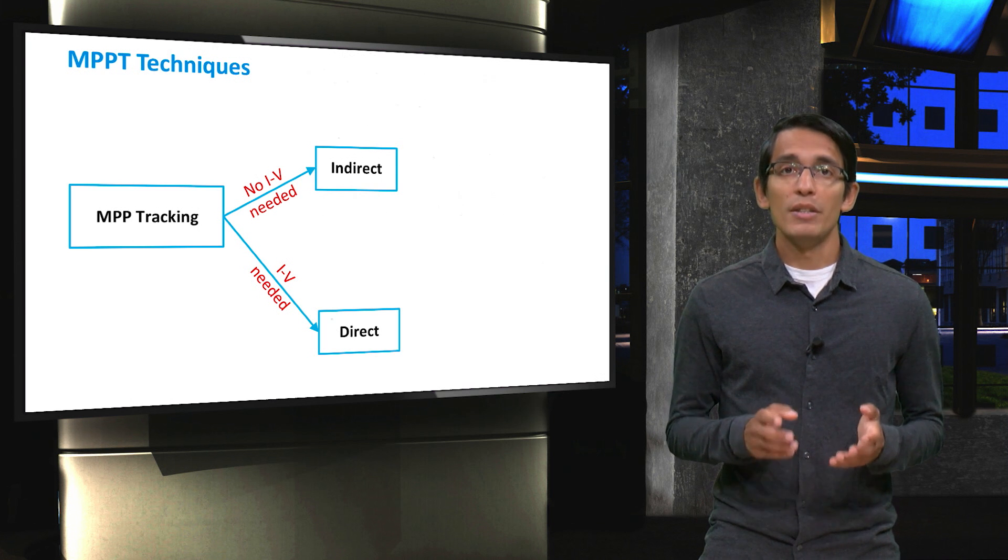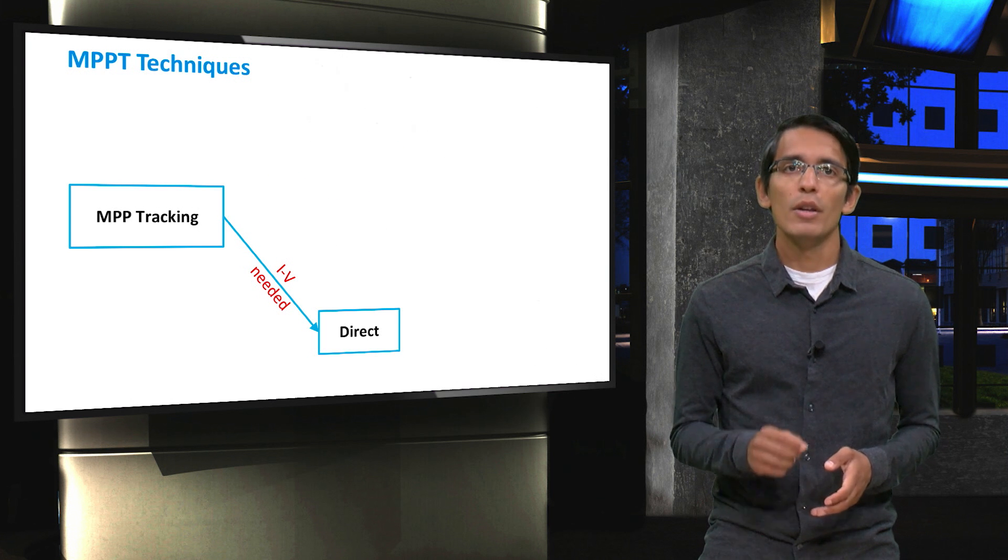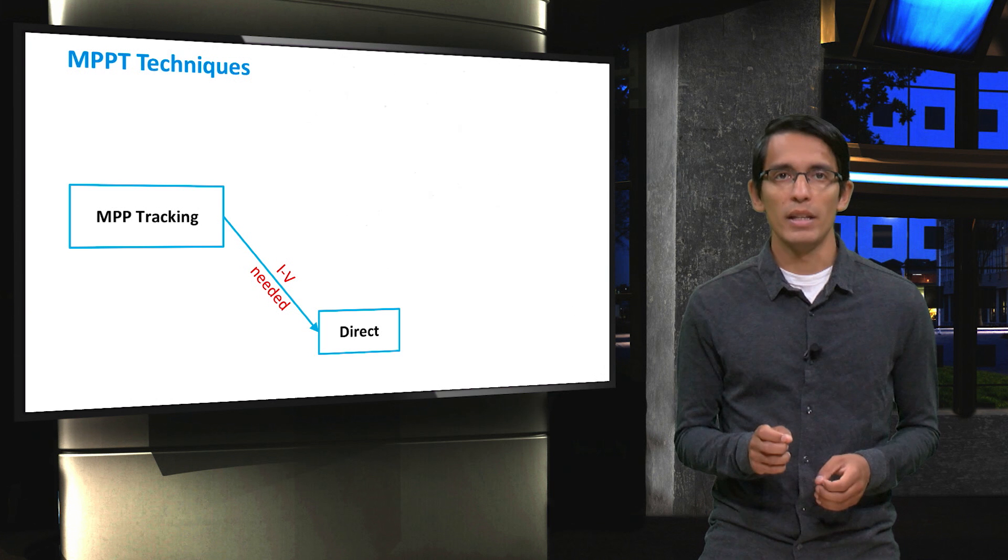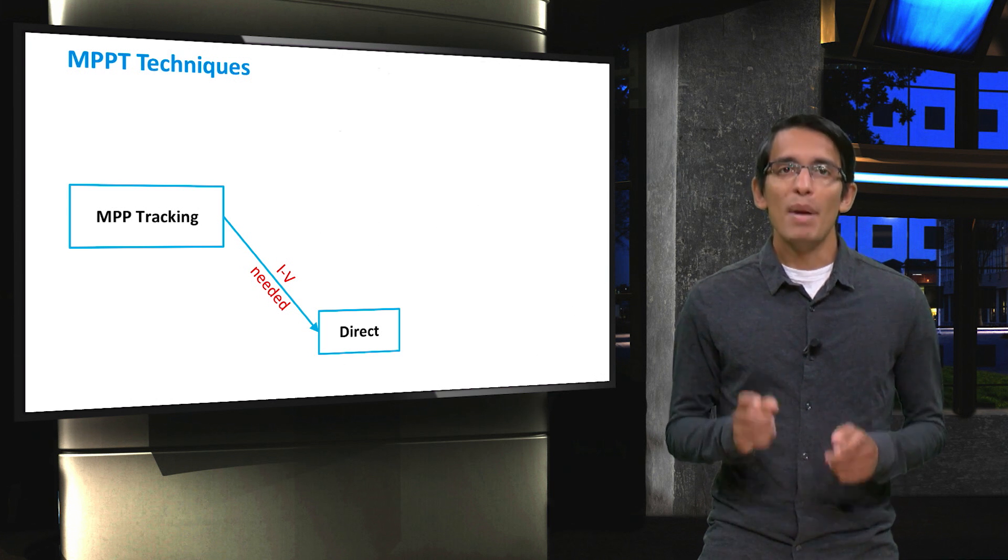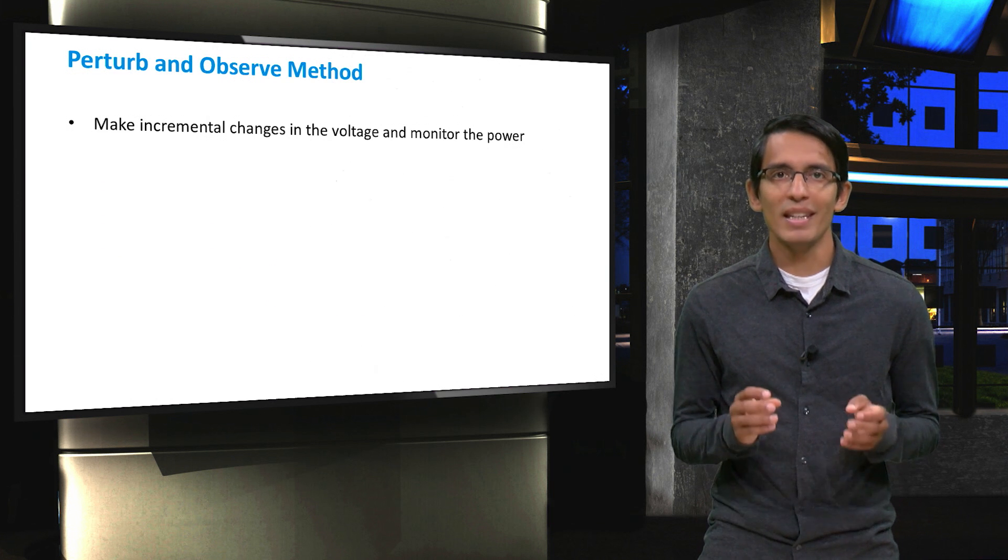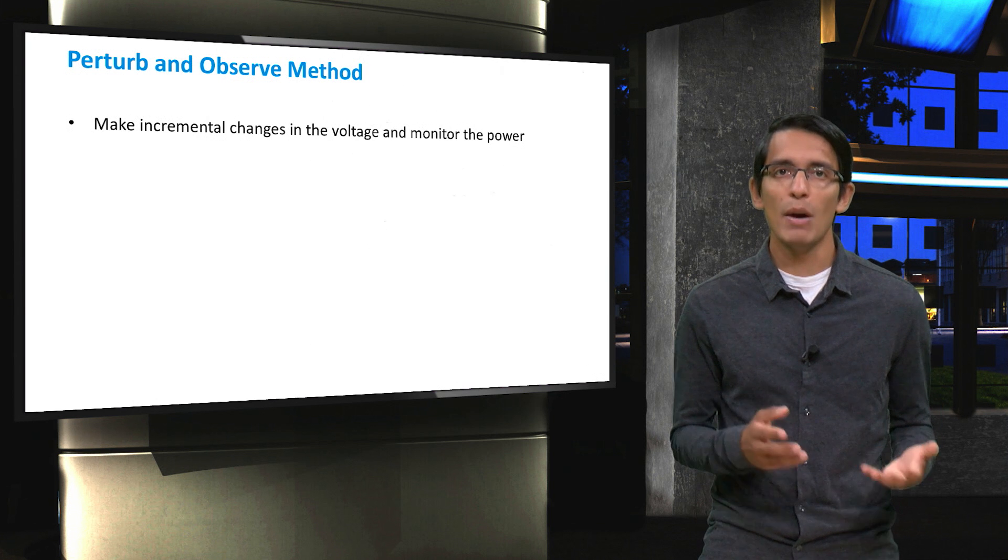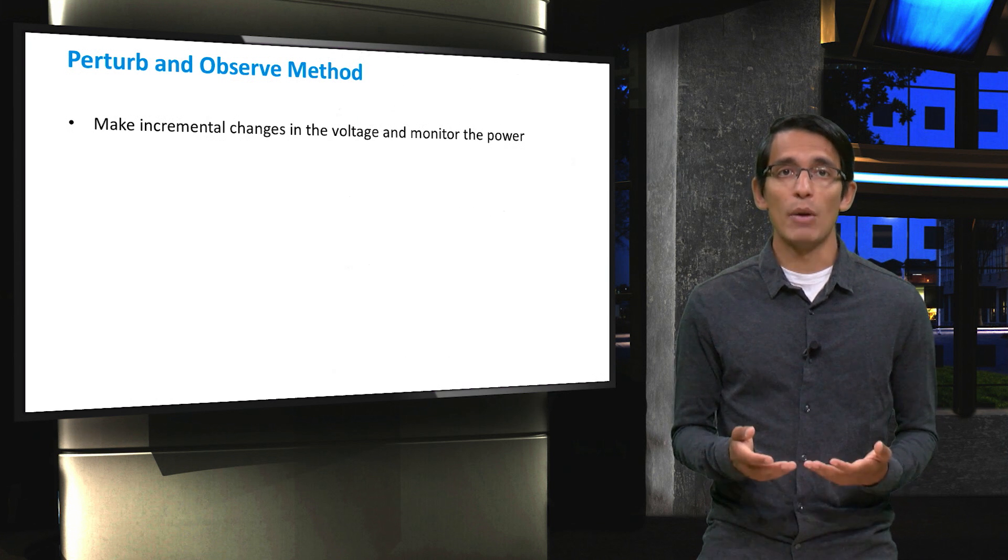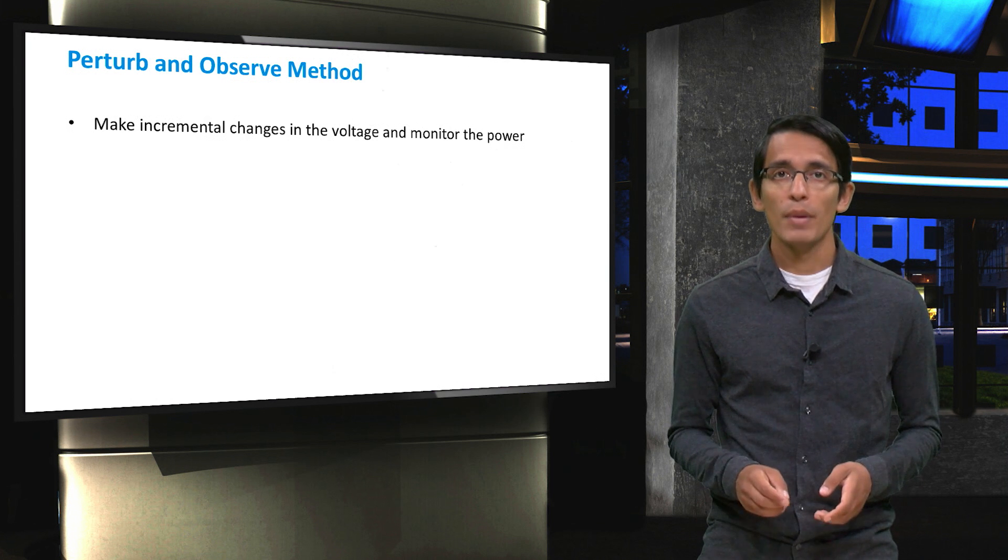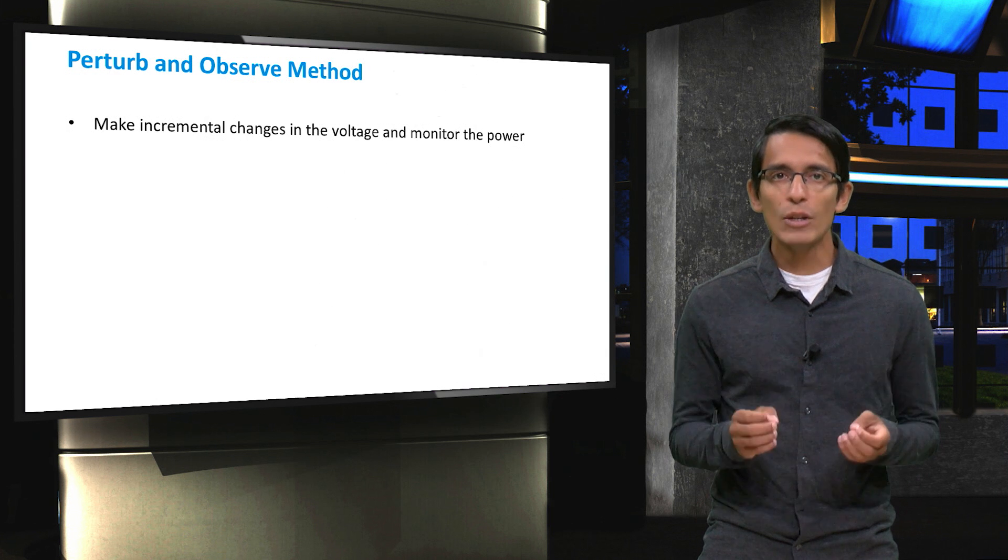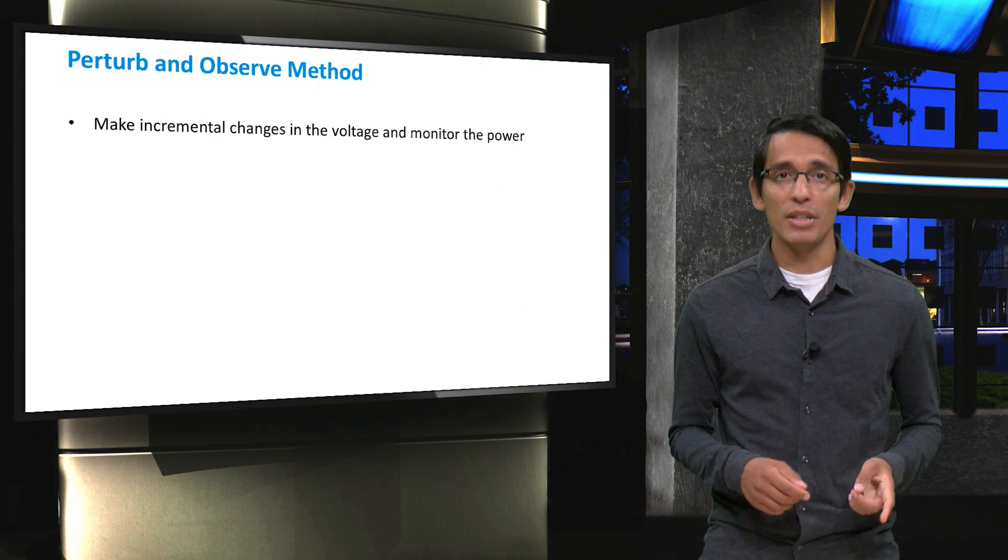The logic behind this technique is quite simple and straightforward. Basically, the MPPT continuously makes incremental changes to the voltage and monitors changes in power. If the change in voltage increases power output of the solar panel, the next perturbation will be in the same direction. If the change in voltage decreases the power output of the solar panel, then the next perturbation will be in the opposite direction.